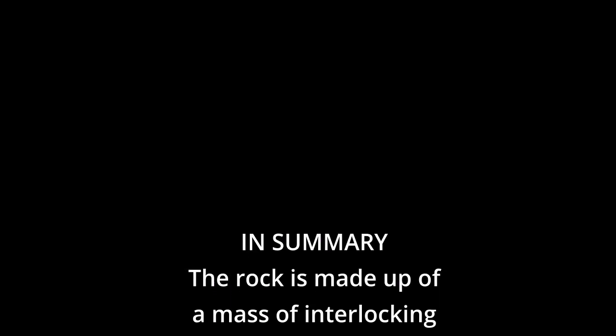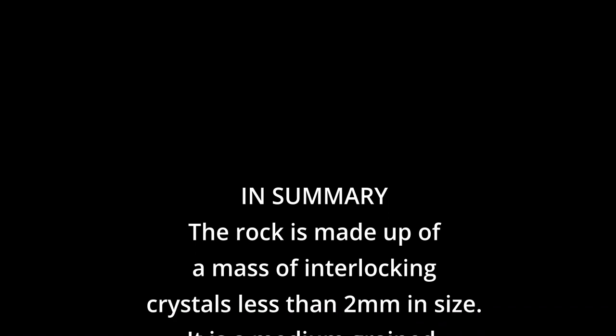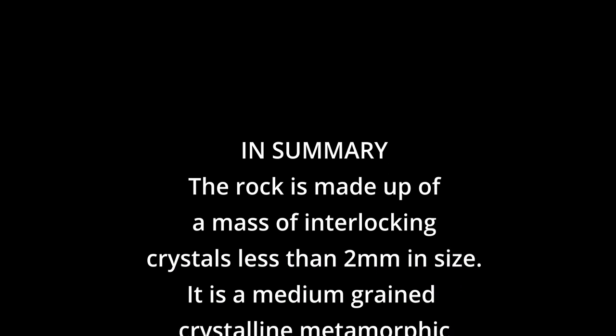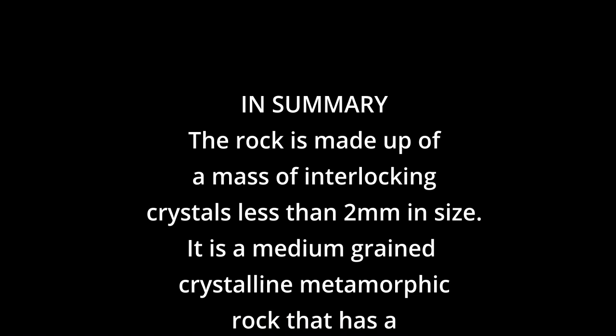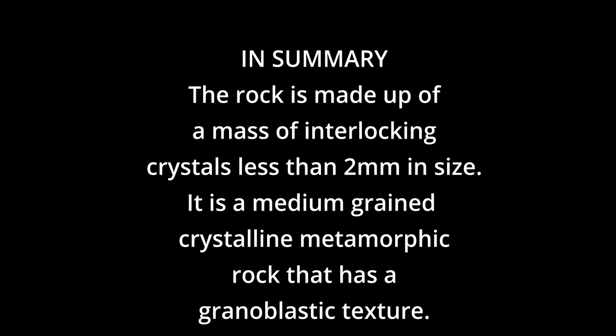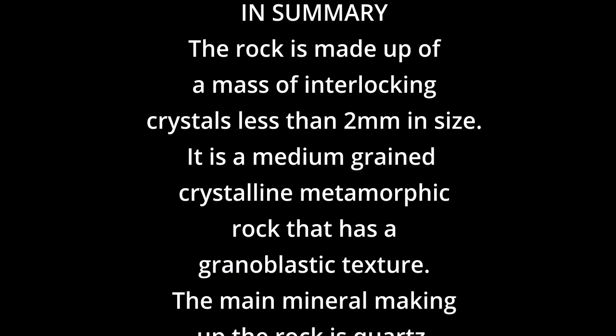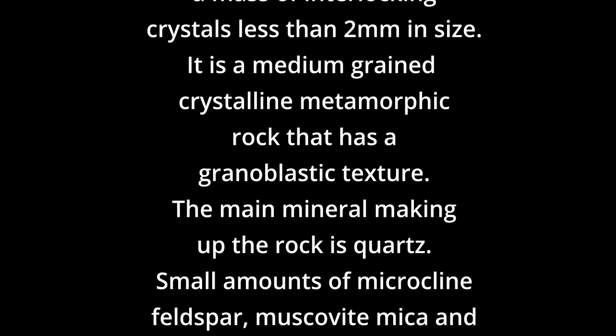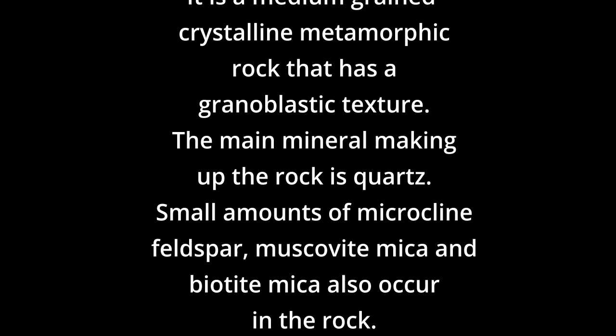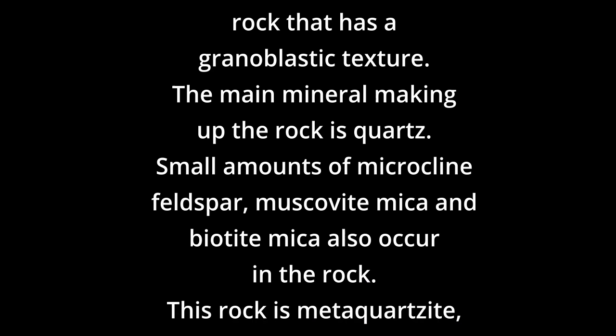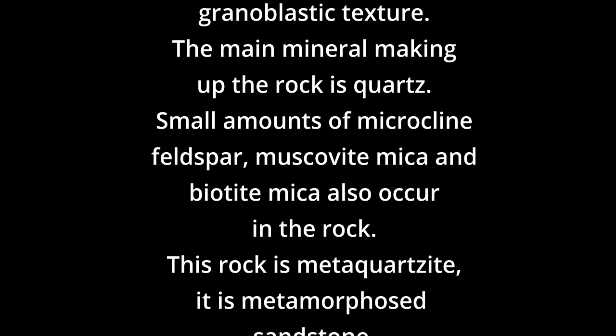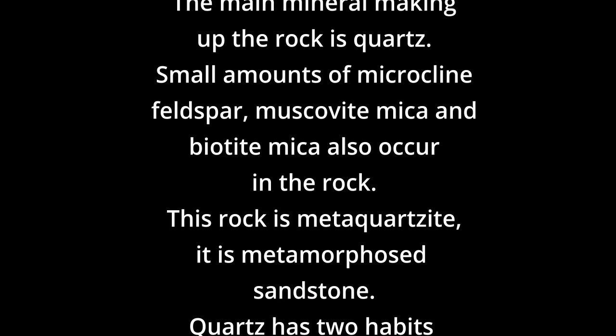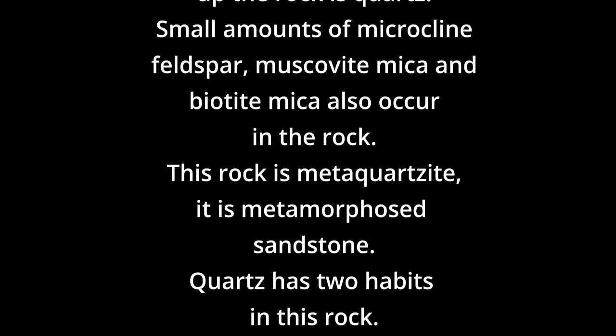In summary, the rock is made of a mass of interlocking crystals less than two millimetres in size. It is a medium-grained, crystalline metamorphic rock that has a granoblastic texture. The main mineral making up the rock is quartz. Small amounts of microcline feldspar, muscovite mica and biotite mica also occur in the rock. This rock is a meta-quartzite. It is a metamorphosed sandstone.